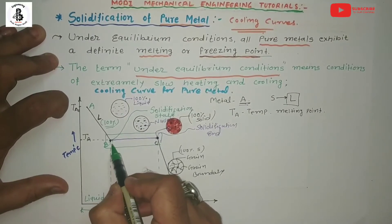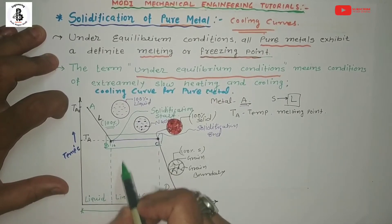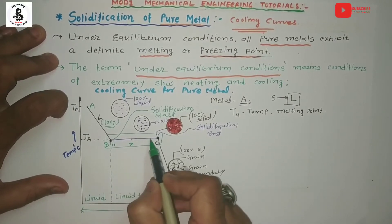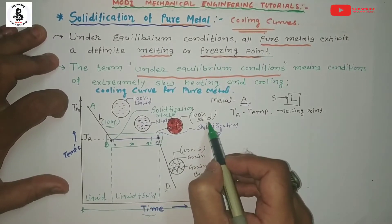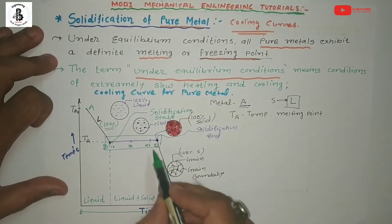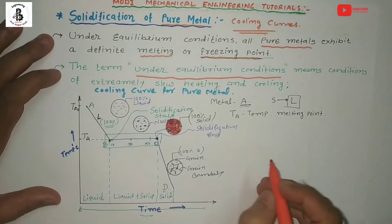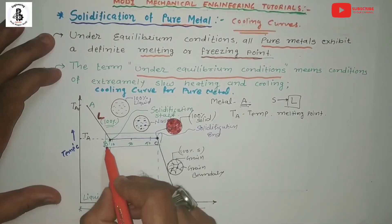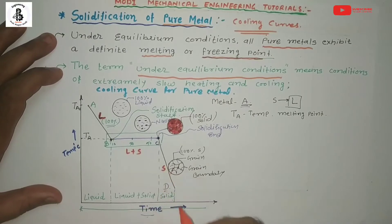From C to D it will be total solid material. To summarize: A to B is 100% liquid; B to C is liquid plus solid; and C to D is 100% solid.